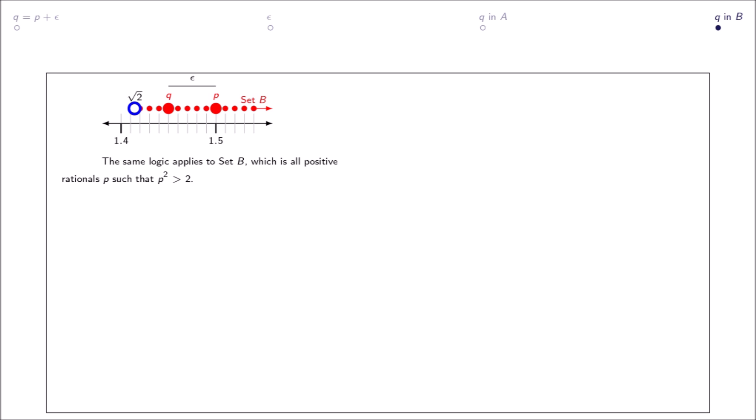The same logic applies to set B, which is all positive rationals p such that p squared is greater than 2. For every p in B, we can find a rational q in B such that q is less than p.